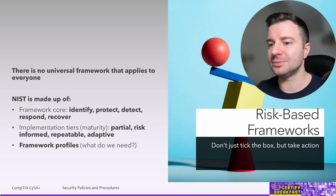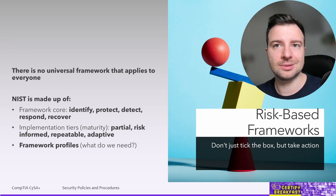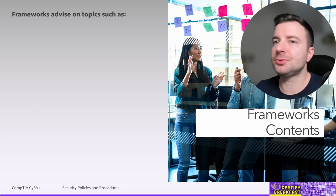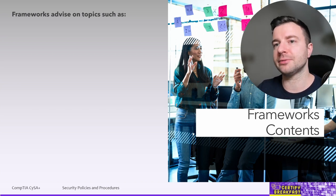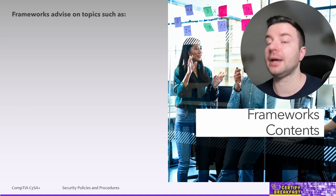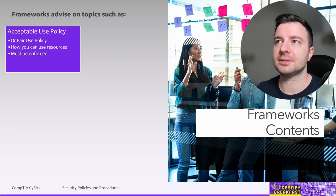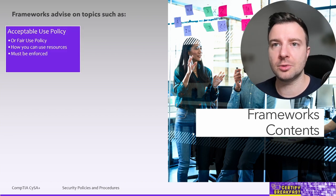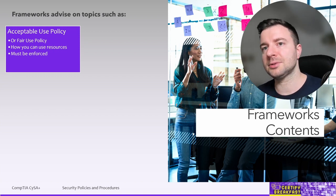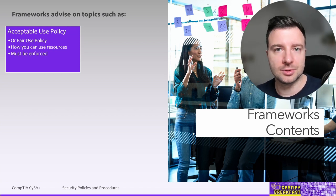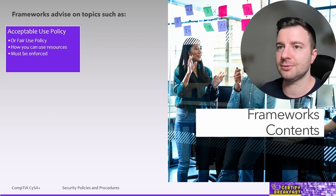As you can see, risk-based frameworks are much more closely related to real life and more down to earth when it comes to actually implementing real security functions. Inside a framework you're going to find many things — most of these are accessible for free online. One major topic is the Acceptable Use Policy, also known as the Fair Use Policy. This is the policy that states how you're allowed to use certain resources in your company: computers, internet, phones, even mobile phones.